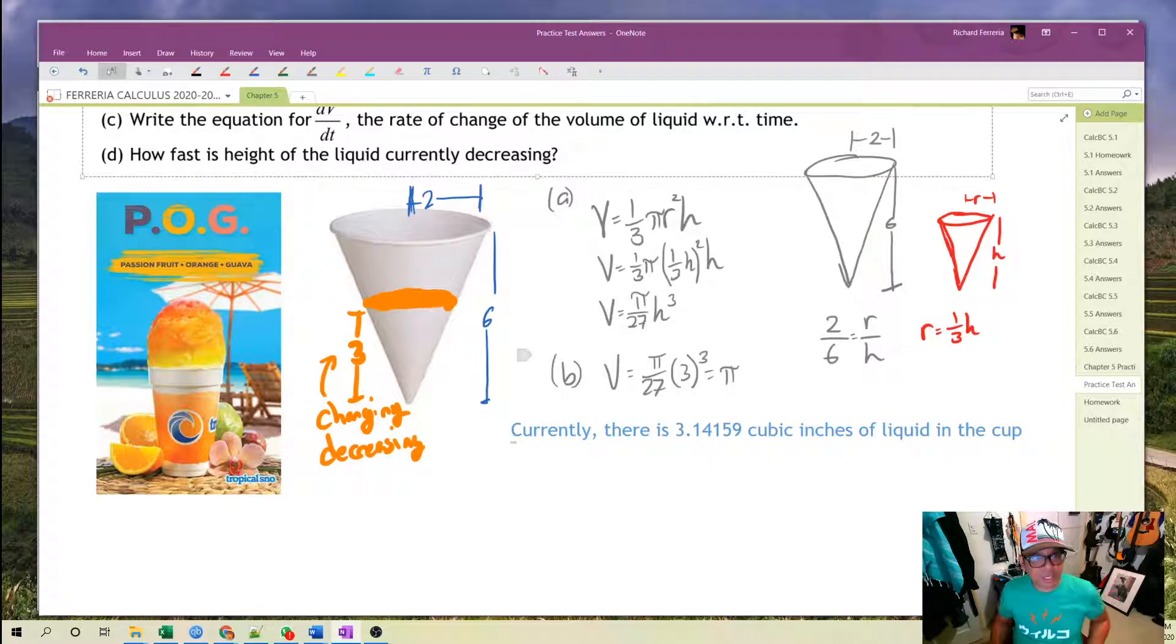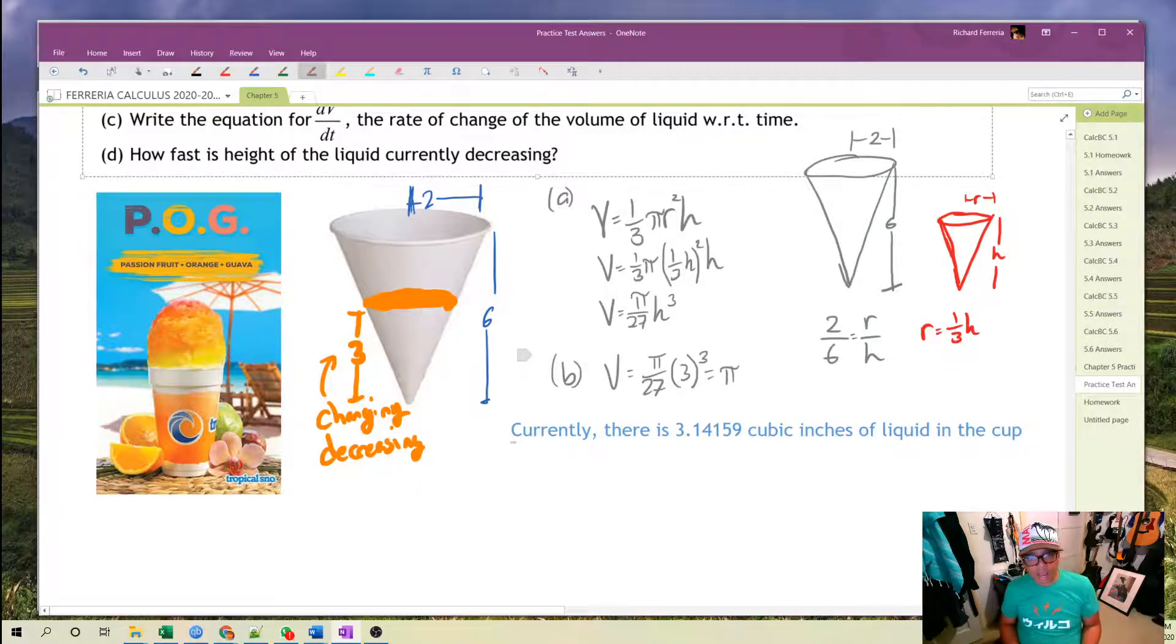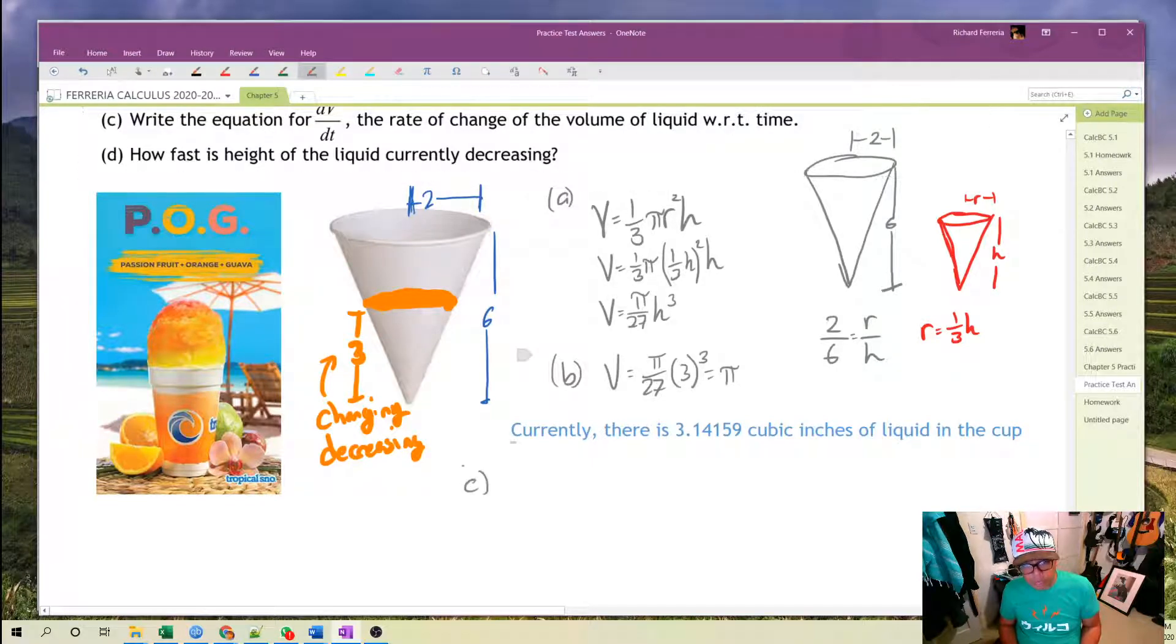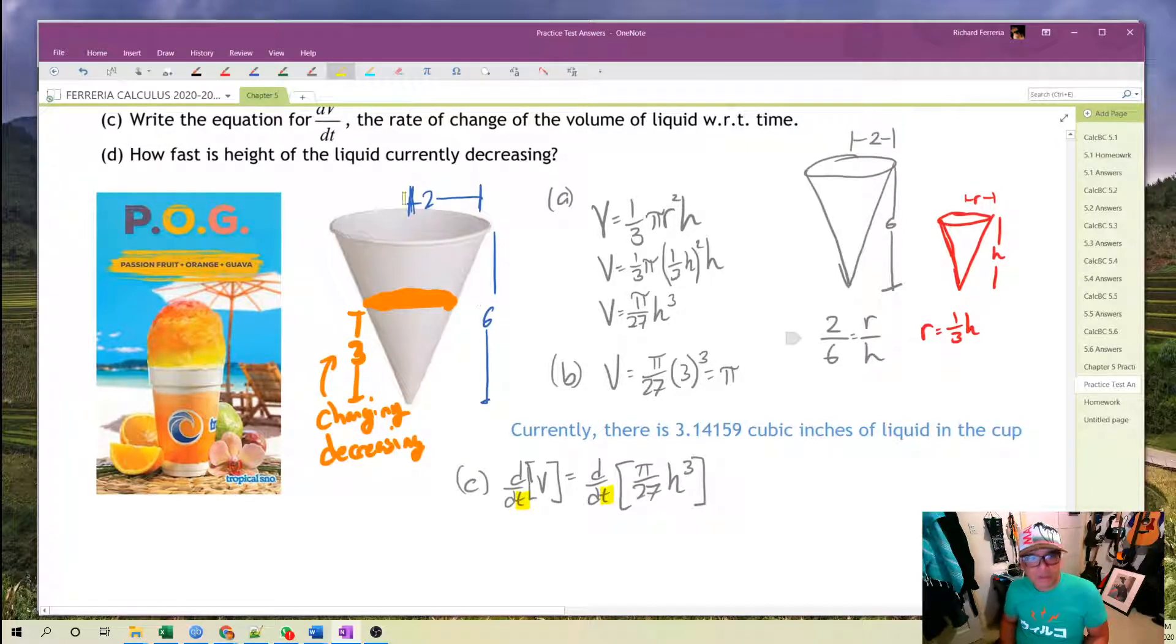Let's take a look at part c. Write an equation for dV/dt, the rate of change of liquid with respect to time. Well, we have an equation for V. Let's just take the derivative of that. d/dt of volume is equal to d/dt of pi over 27 h cubed. Notice that we're taking a derivative with respect to t and the variables we're given are different than t. So we'll have to use some chain rule in order to take the derivative successfully.